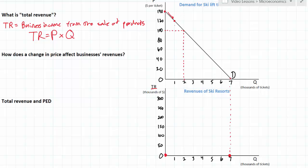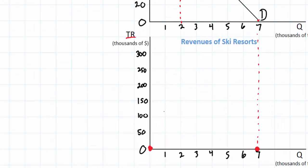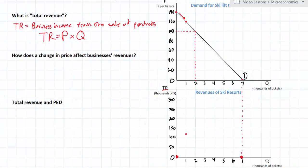At a price of $120, 1,000 lift tickets will be demanded, so ski resorts can expect to earn $120,000, putting a point right here on our total revenue curve. Let's say that this point on the demand curve corresponds with this point on the total revenue curve. As they lower their price to $100, they'll sell an additional 1,000 lift tickets, earning them $200,000 of revenues, so that brings us to this point on our total revenue curve: $200,000 at a price of $100 per ticket times 2,000 lift tickets.